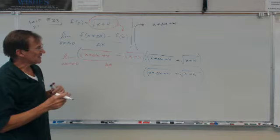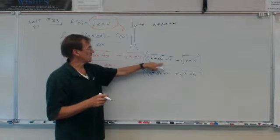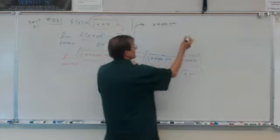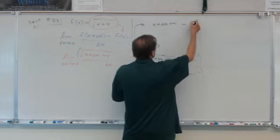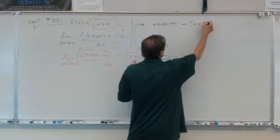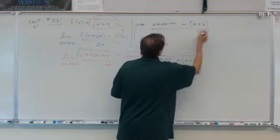The middle terms disappear. They cancel when you multiply by the conjugate. The last term is just going to be minus and then parentheses x plus 4.